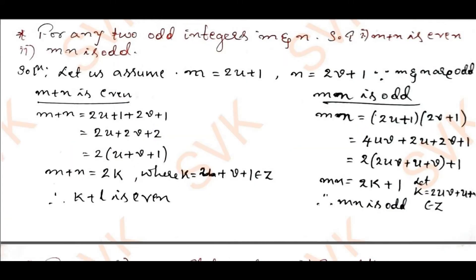For any two odd integers m and n, show that m plus n is even and mn is odd. Since both m and n are odd, I define m as 2u plus 1 and n as 2v plus 1. Consider m plus n: that is (2u + 1) + (2v + 1) = 2(u + v + 1) = 2k, where k = u + v + 1 belongs to the integers. Therefore m plus n is even.